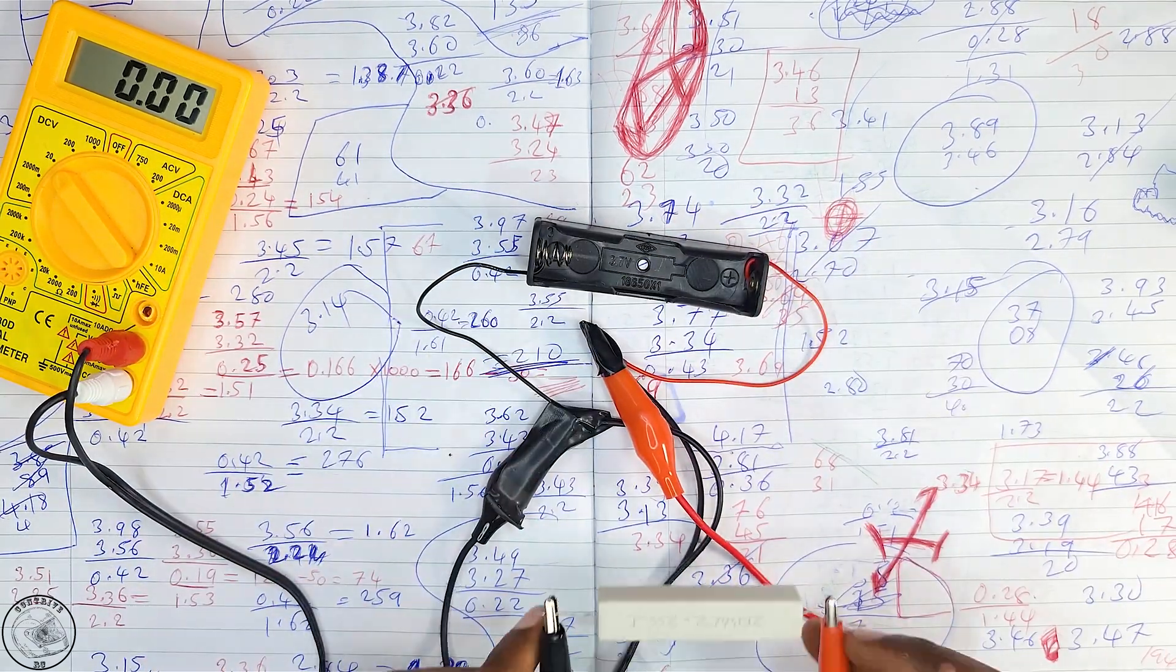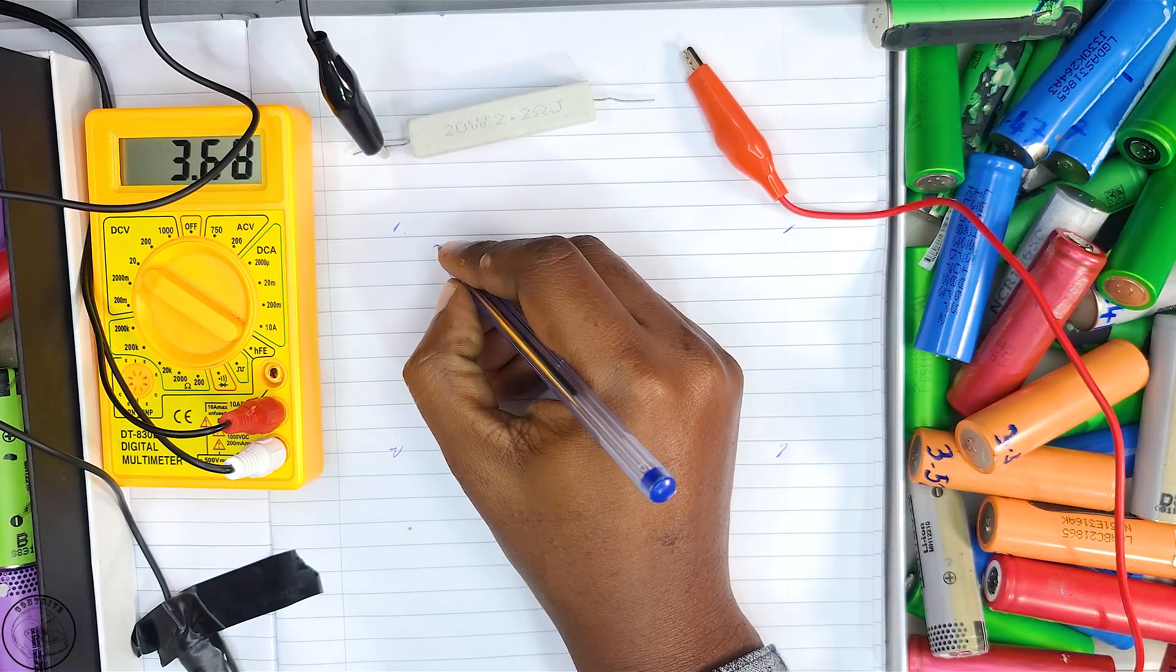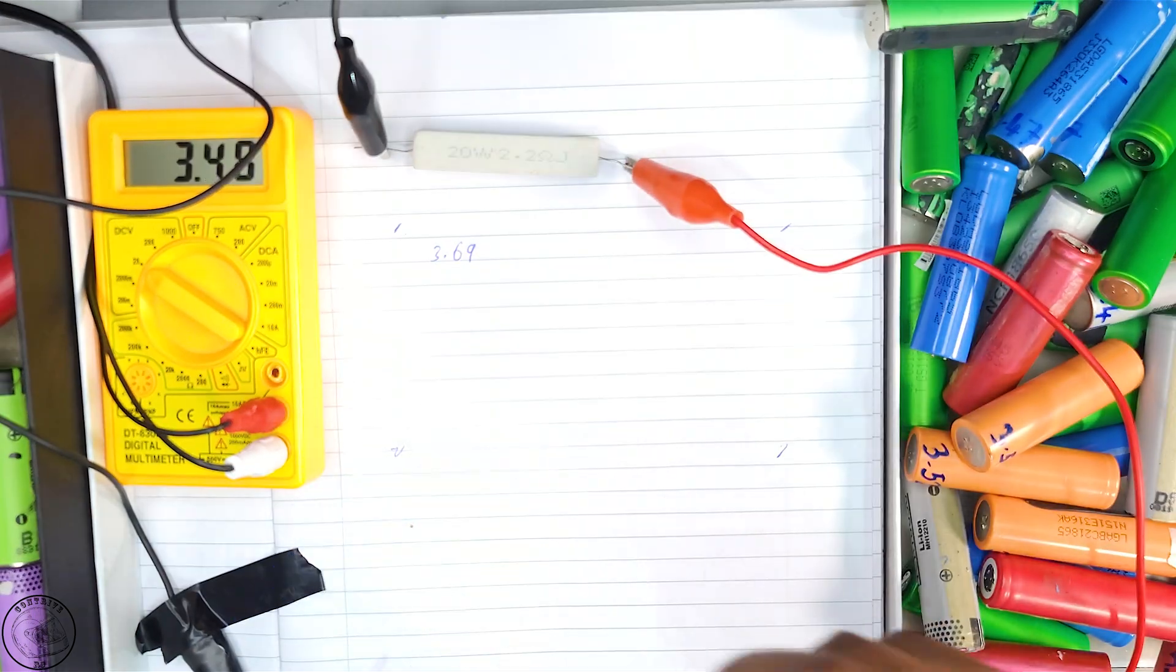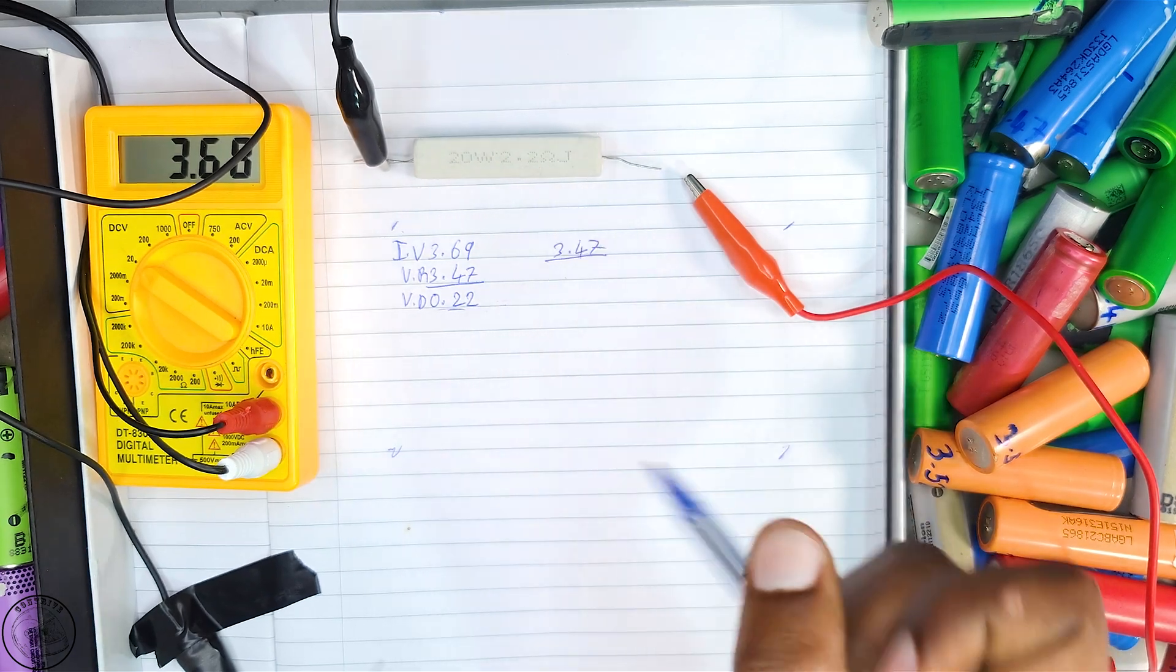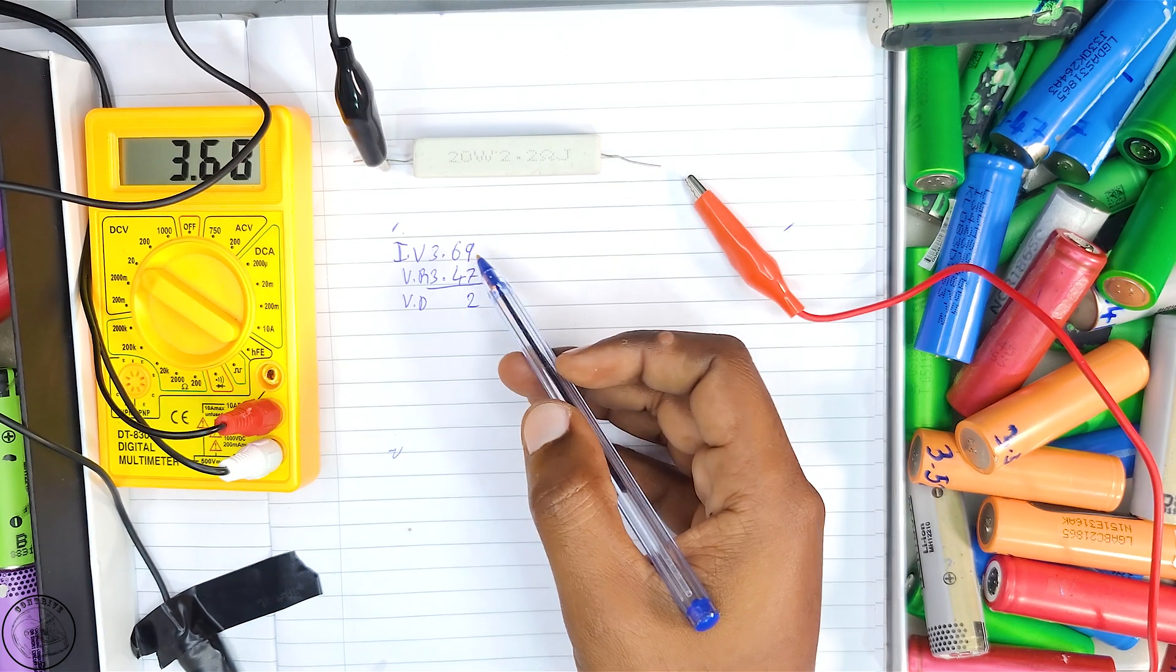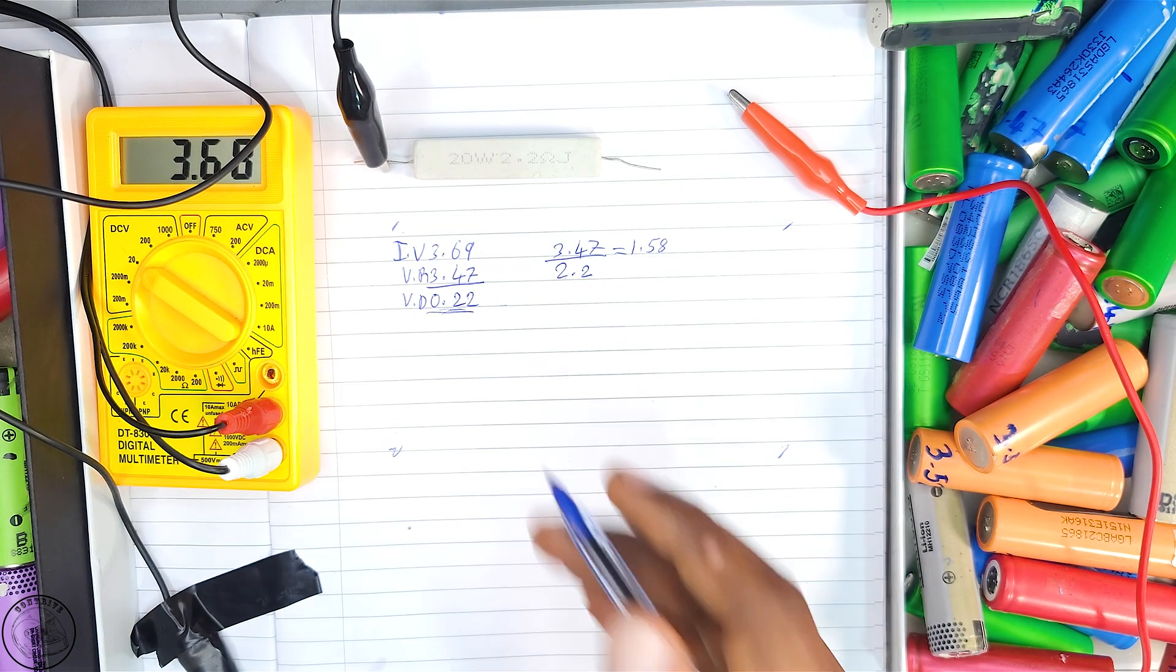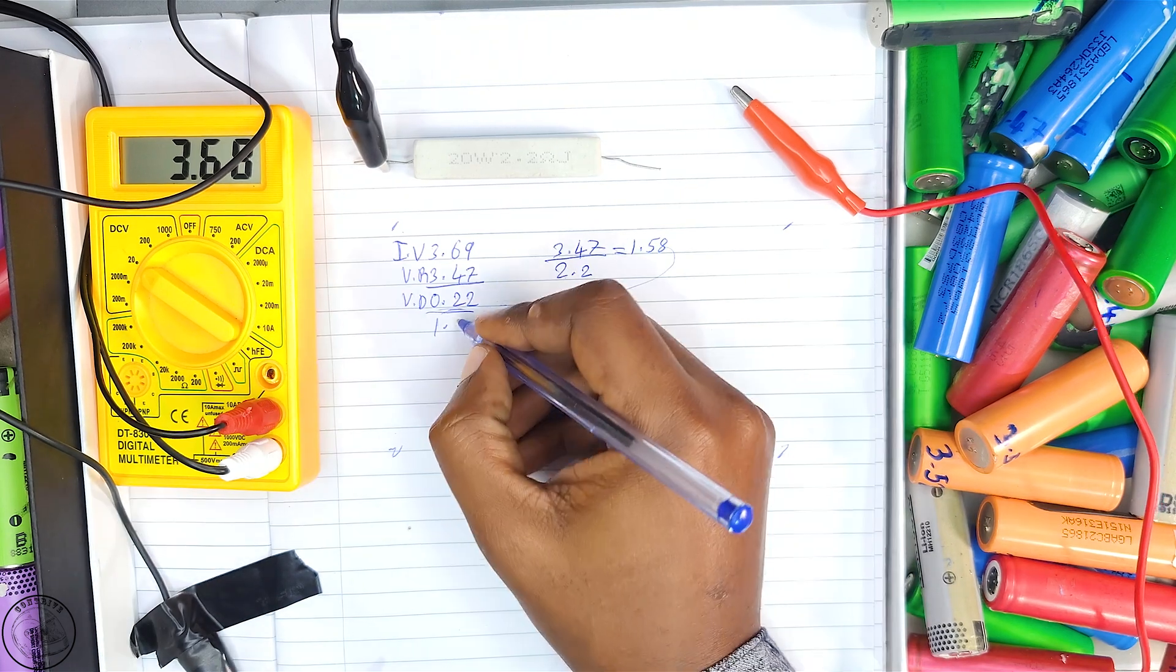To quantify internal resistance, we measure the open circuit voltage when unloaded, then connect our resistor and measure voltage again. Using Ohm's law, we calculate current through the circuit. Then we apply Kirchhoff's law to determine voltage drop across internal resistance. Finally, we use Ohm's law again to compute internal resistance.